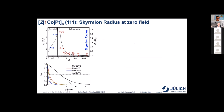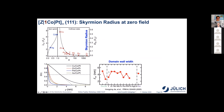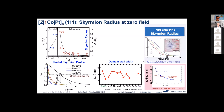Putting all these parameters together into our skyrmion radius equation, we see the skyrmion radius from zirconium to copper in terms of the domain wall width. The domain wall width of these atomic-scale magnetic systems is typically around five nanometers, so the skyrmion radius is also relatively small — on the order of one to three nanometers for the copper system — which is consistent with the experimental measurements of the Wiesendanger group, also in the order of two nanometers.